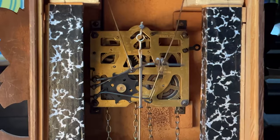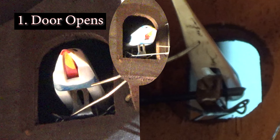Note the sequence of events as the cuckoo strike occurs. First, the bird pops out of the door. This action is done using the clock movement itself. There is a wire that runs from the bird to the door, causing it to open.